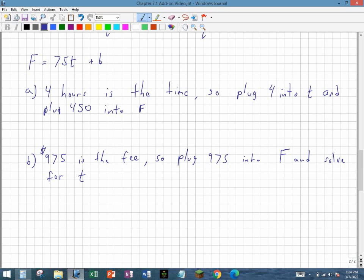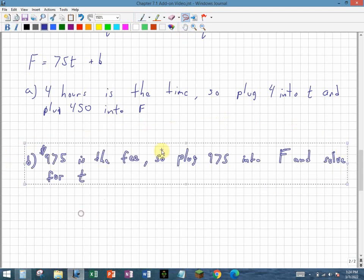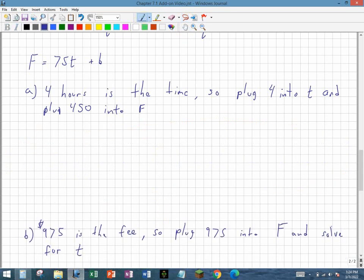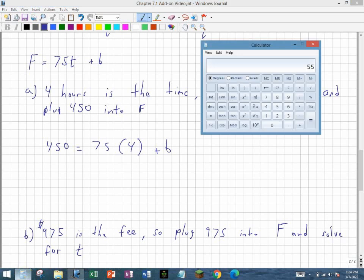The first thing we do is we take 4, which is the number of hours in time, and we plug 4 into t. But before we can solve for b, we have to also plug 450 into f, into the fee. So what we do is we take these two values, and we substitute them into our equation, and we solve for the missing third value. So my f value is 450, is equal to 75 times t, which is 4, plus b, and we're going to solve for b.